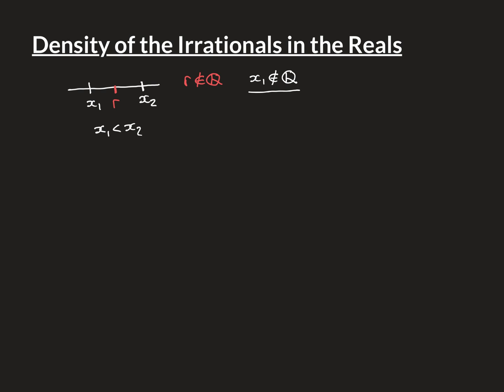The way we can find our r is to consider numbers of the form x1 plus 1/n, where n is a positive integer. By the Archimedean property, if we make n big enough, we're guaranteed to eventually get something inside the interval from x1 to x2. The interval has finite length x2 minus x1, and if we make n large enough, 1/n will be smaller than this length, so x1 plus 1/n will be inside the interval.